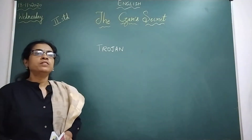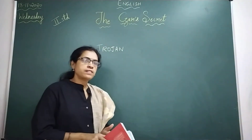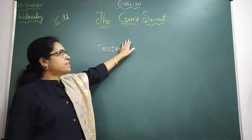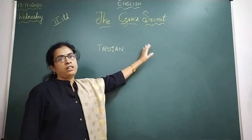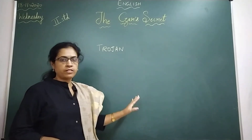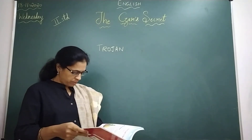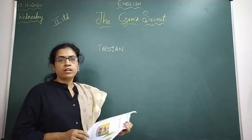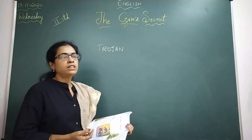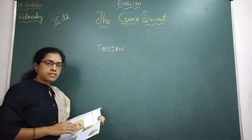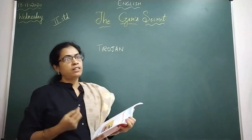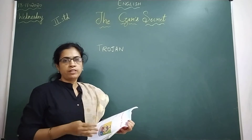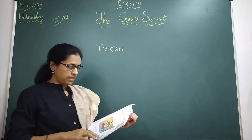Hello children, welcome to English class for second standard. The topic is The Czar's Secret. So open the textbook, page number 110. I have done half of this lesson already. You all know the Czar's secret — the Czar had a goat's ear. Let me just revise what I have done in the previous class.